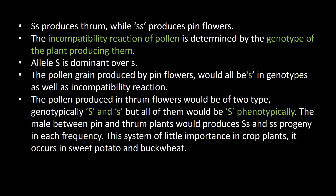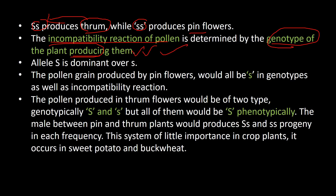Genetically, there are two types of flowers: pin and thrum. Thrum is produced from SS (heteromorphic allele), whereas pin flowers are produced by the recessive allele ss. An important point: the incompatibility reaction of the pollen is always determined by the genotype of the plant producing it. Here, allele capital S is dominant over small s.